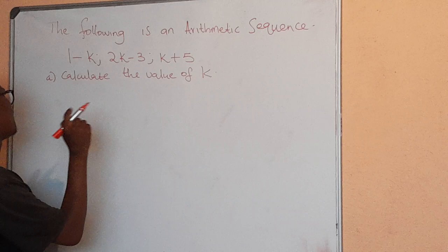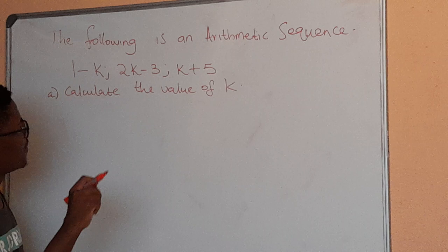1 minus k is the first term, 2k minus 3 is the second term, k plus 5 is the third term. So the question is, calculate the value of k.